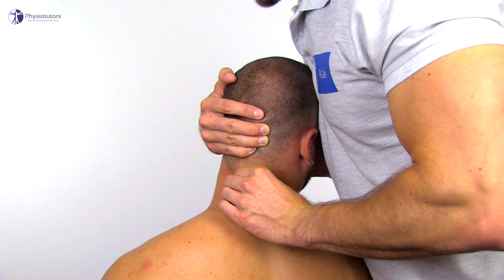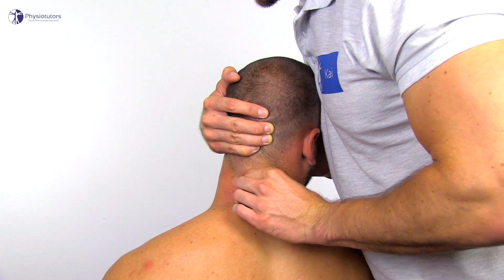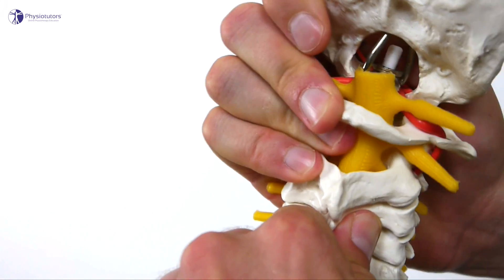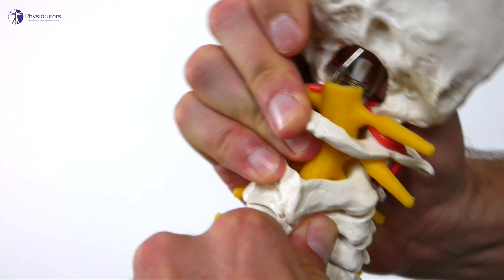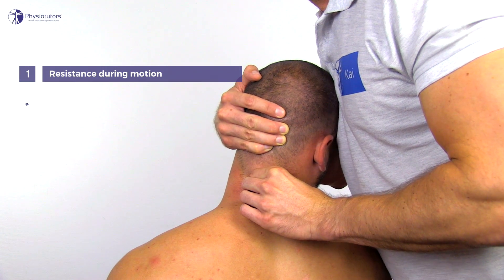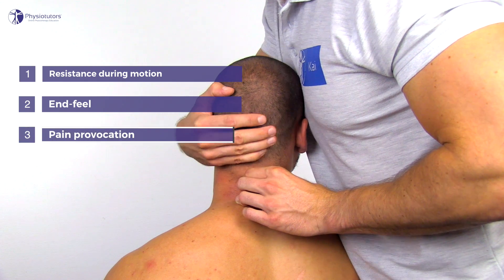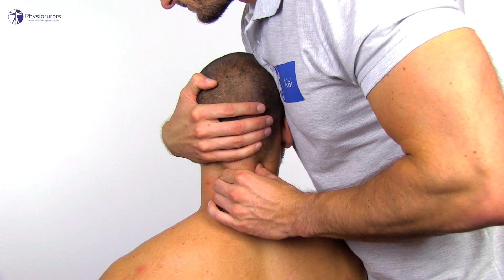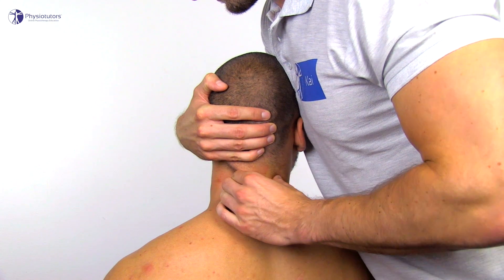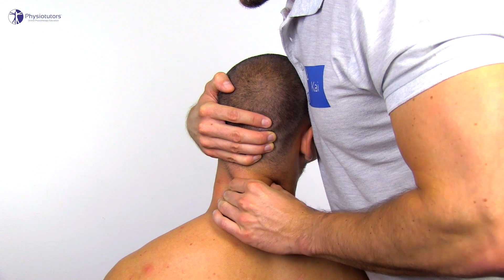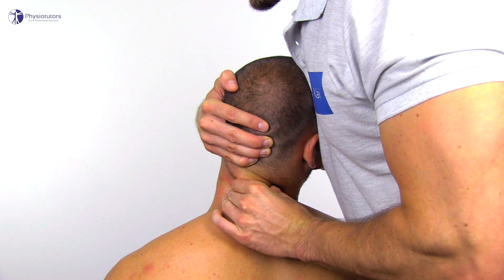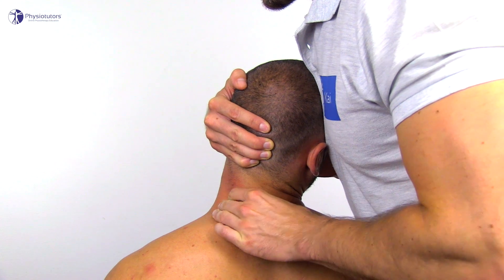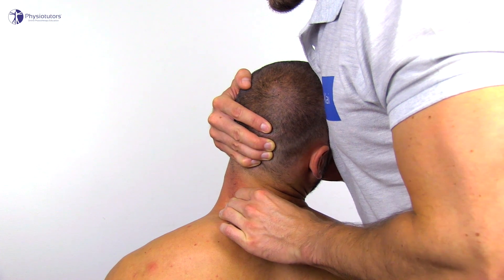For the lateral flexion component, keep C3 fixated and move C2 laterally with your working hand. Each component is judged on resistance during motion and feel as well as possible pain provocation compared to the segment above or below. In order to test the lower segments, move your fixating hand down onto C4 with your working hand staying on the occiput or moving to the contralateral arch of C3, and now perform a 3D extension movement. Continue this way until you reach C7 with your fixating hand.